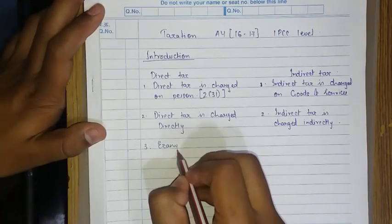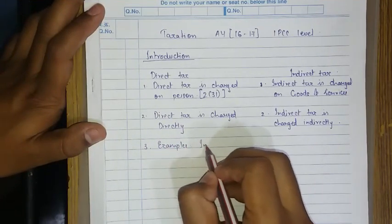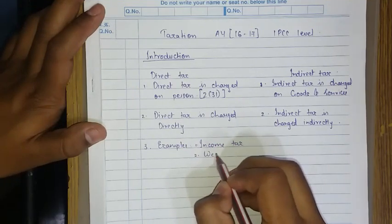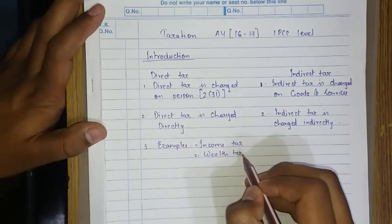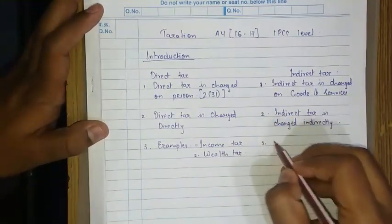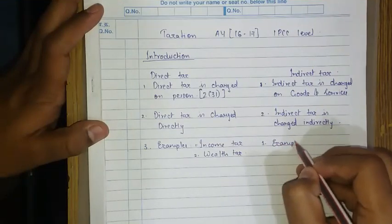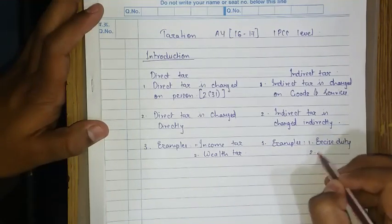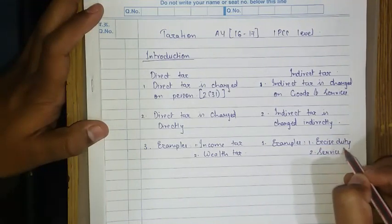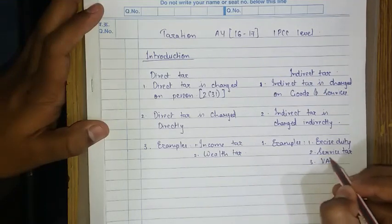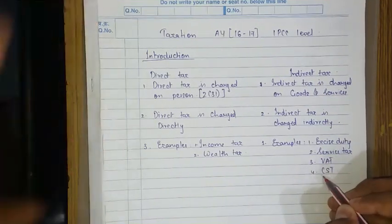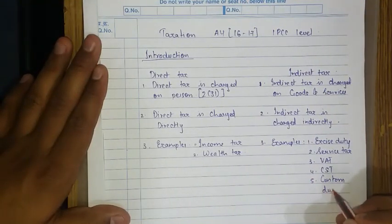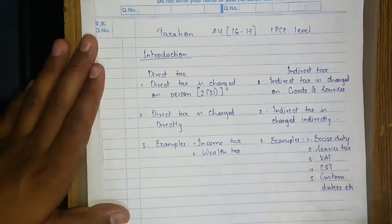Examples of direct taxes include income tax and wealth tax. Examples of indirect taxes include excise duty, service tax, VAT, CST that is central sales tax, custom duties, etc. There are many more for indirect tax.